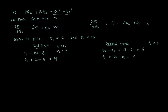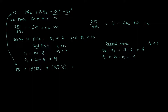To get producer surplus, we substitute into the formula: 18 times 12 plus 12 times 6 minus 6 squared minus 12 squared, which gives us a producer surplus equal to 108.